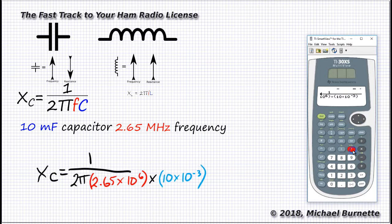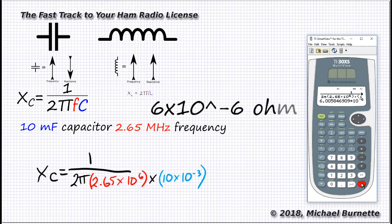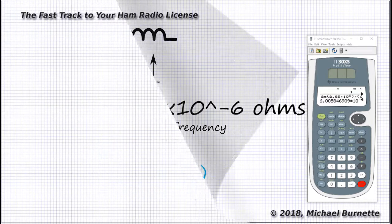We come up with either 0.00006006 or 6 times 10 to the negative sixth ohms of reactance. Think about that. For this 10 millifarad capacitor, there's only 6 microohms of reactance at that frequency. For all practical purposes, it is a straight wire. Now you know why we have picofarad capacitors.